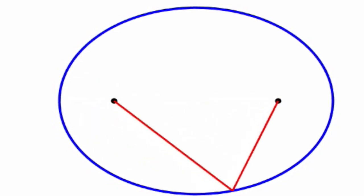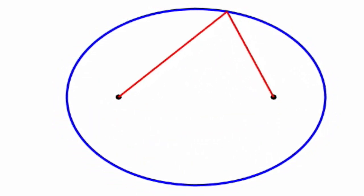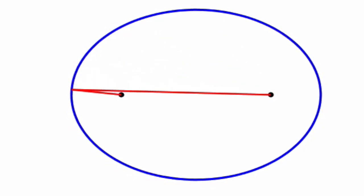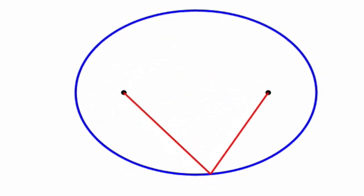If you have two fixed points, the corresponding ellipse is the set of all blue points where the total length of the red path never changes.